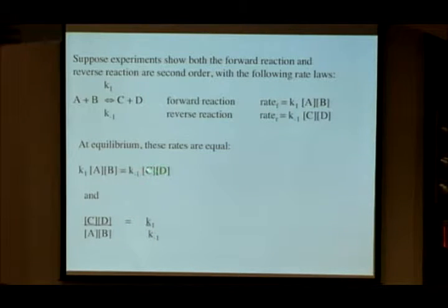If we rearrange this expression and move the rate constants to one side and the concentration terms to the other, this expression is the same as that expression. We also know what this expression is equal to, which is our big K. Therefore, our equilibrium constant equals the rate constant for the forward reaction over the rate constant for the reverse direction. Here is an expression that compares equilibrium constants with rate constants.